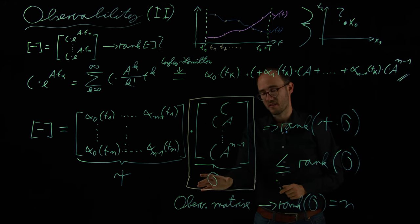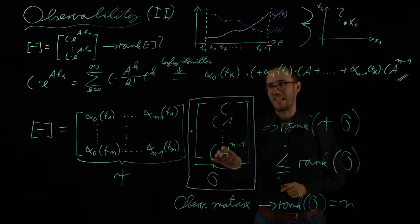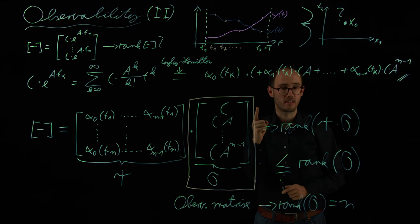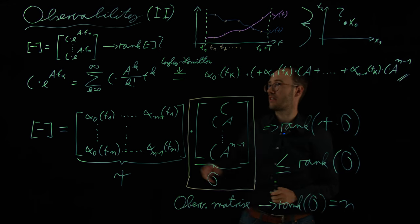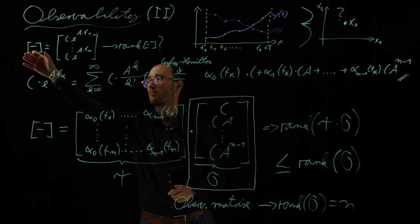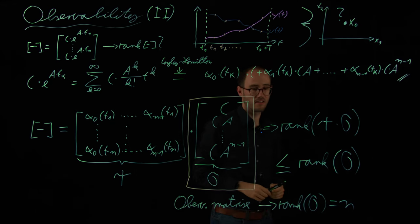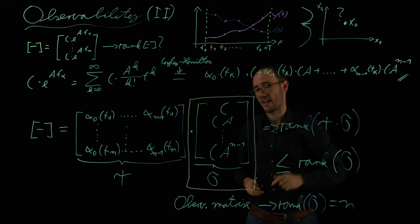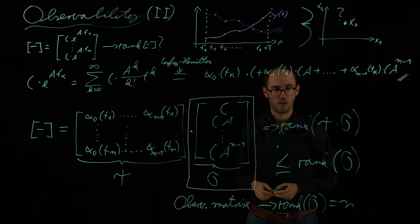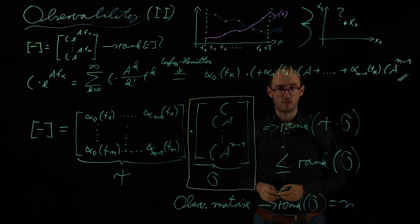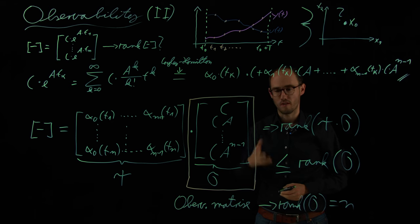The interesting thing is, we have derived this matrix for the discrete case of a scalar output. So we were just considering one scalar output, because then this rank criterion would basically lead to the invertibility, to the property that we can invert this matrix xi and therefore directly calculate x0. But the interesting thing is that the observability matrix also holds true for systems with more than one input and output. So this criterion here is also applicable to general linear ODE systems, state space systems, which have more than just scalar outputs.